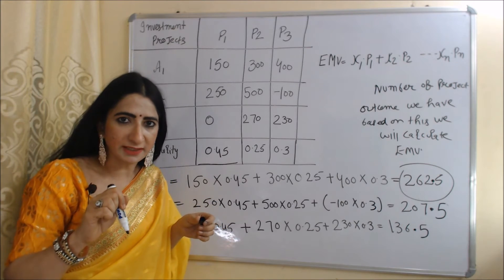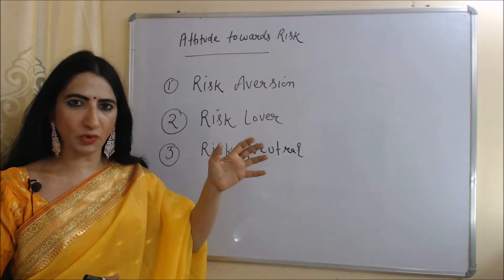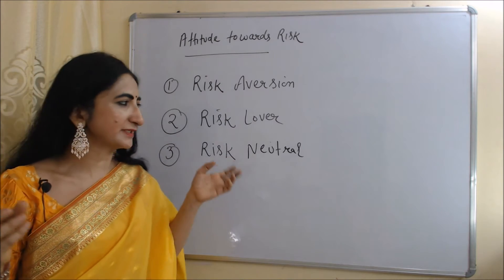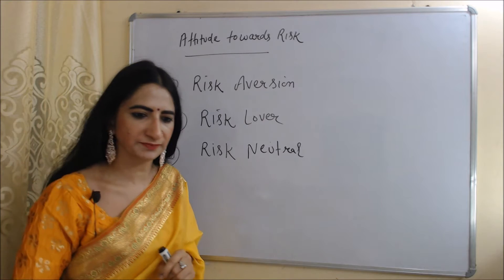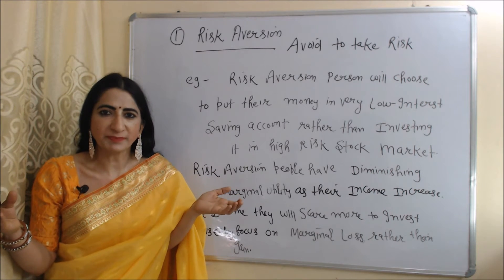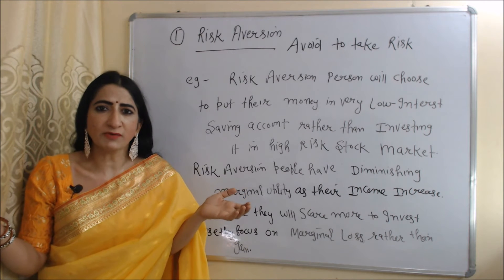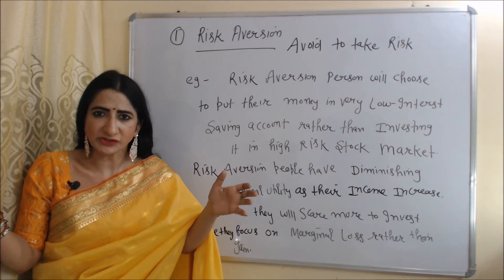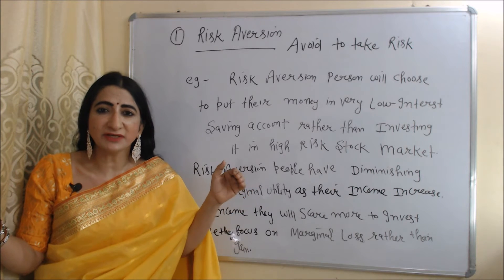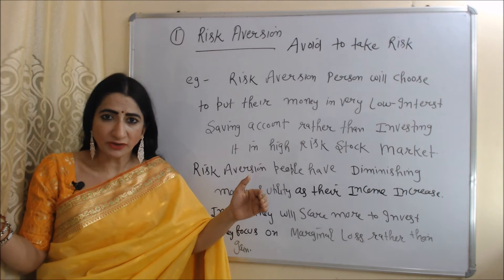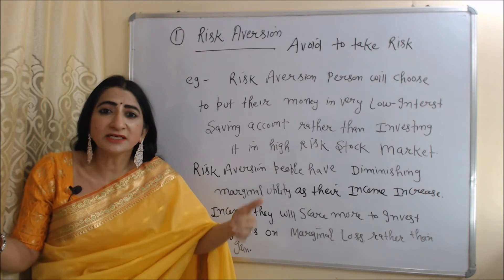Now we are going to talk about attitude towards risk, covering three types of risk preferences: risk aversion, risk lover, and risk neutral. First, risk aversion — these people avoid risk; they don't want to take too much risk. For example, a risk-averse person will put their money in a low-interest savings account rather than investing in a high-risk stock market. That's why these people have diminishing marginal utility as their income increases, because at higher income they focus more on marginal loss rather than on marginal gain.